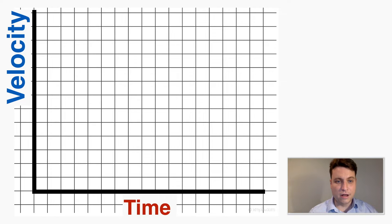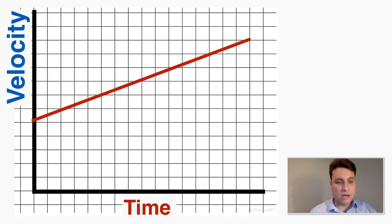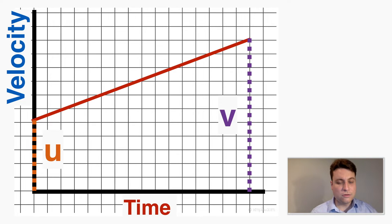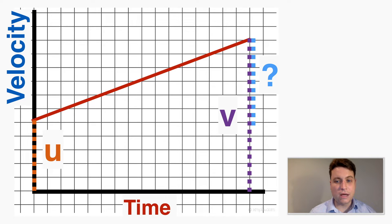I'm going to draw an example line on this velocity-time graph. We don't need to know the exact numbers to know what different parts of this graph mean. The y-intercept of the graph is the starting velocity, which in the kinematics equations we call u. The last point on the graph is equal to the final velocity of the object, v. This is going to be important for visualizing why the first kinematics equation works the way it does.